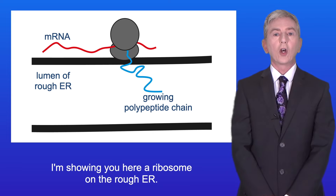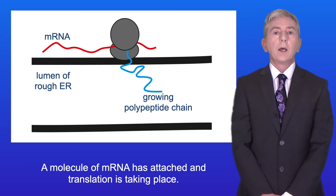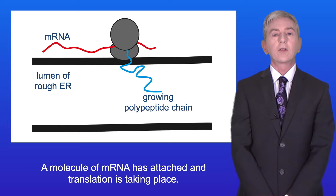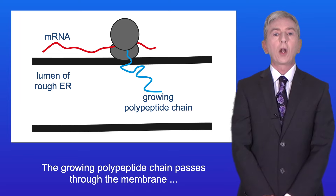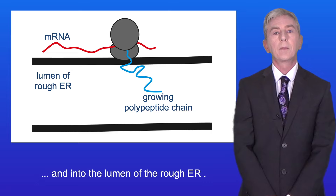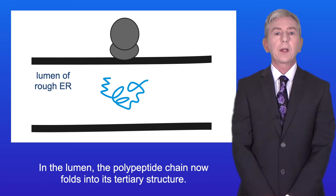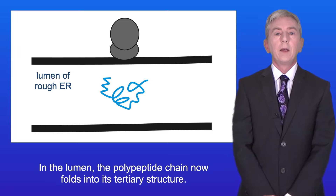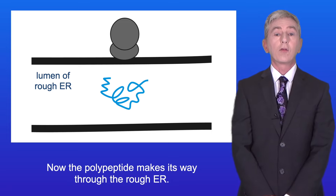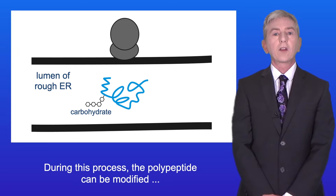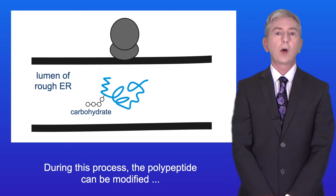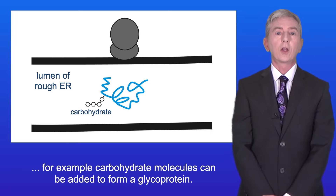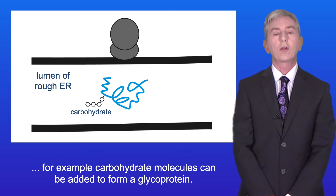Here is a ribosome on a rough ER. A molecule of mRNA has attached and translation is taking place. The growing polypeptide chain passes through the membrane and into the lumen of the rough ER. In the lumen, the polypeptide chain folds into its tertiary structure. As the polypeptide makes its way through the rough ER, it can be modified — for example, carbohydrate molecules can be added to form a glycoprotein.